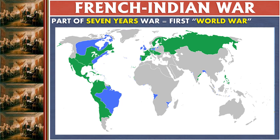Even though we talk about the First World War happening in the 20th century, the Seven Years' War, which was the larger part of the French and Indian War, was also in a sense a world war. The colonists were aware of this, because they were one of the colonies in this much larger context. A world war felt like, 'Oh my gosh, we've never seen something like this before — this is the end of the world,' with conflicts going on in so many different places.